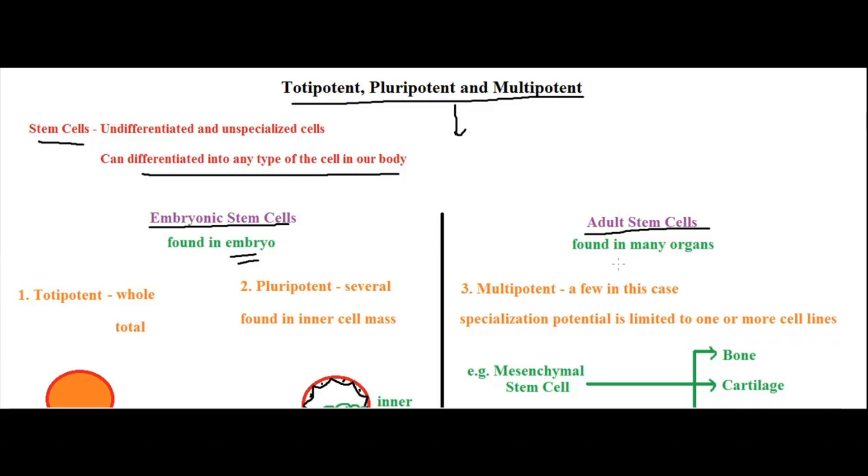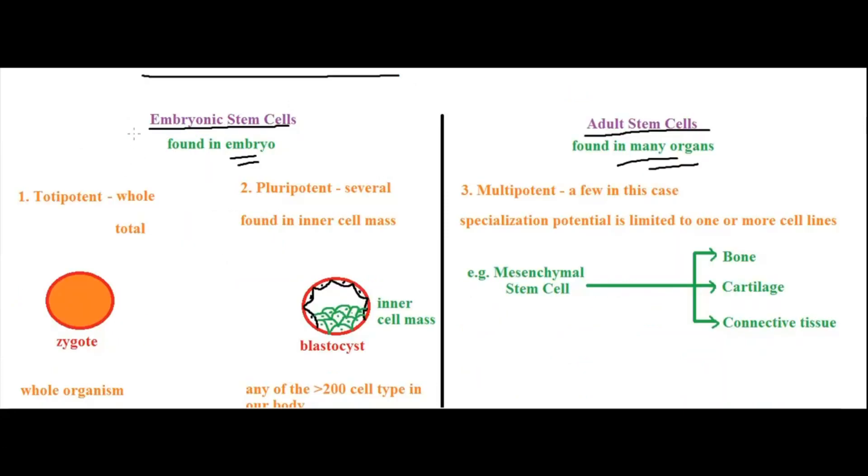Going into detail with embryonic stem cells, these can be either totipotent or pluripotent. Let's keep pluripotent aside for a moment and focus on totipotent. The term totipotent means whole, or you can remember it as total.